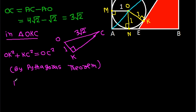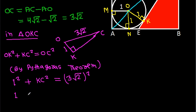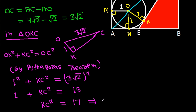By the Pythagorean theorem: OK² + KC² = OC². Since OK = 1 and OC = 3√2, we get 1 + KC² = (3√2)² = 18. So KC² = 17, which means KC = √17.